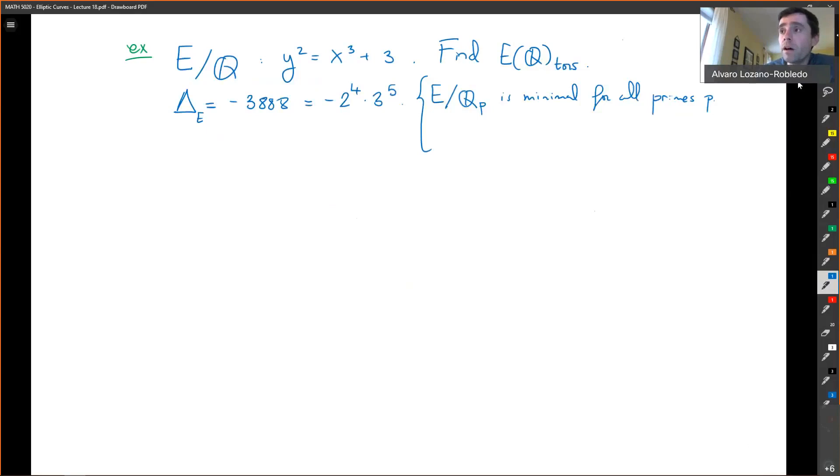And second, it also tells me that the reduction for 2 and 3 I might will have problems, but this is non-singular for P bigger or equal to 5. Right. Okay. Fantastic.